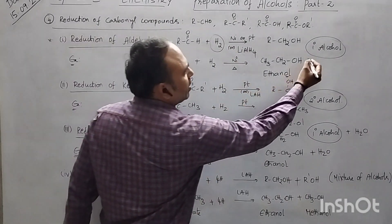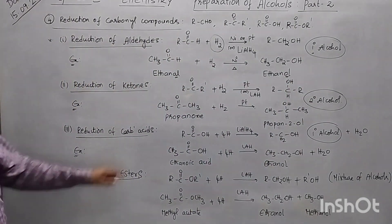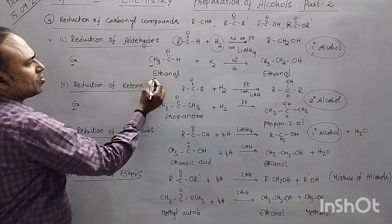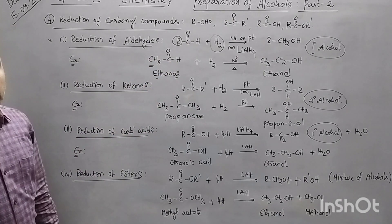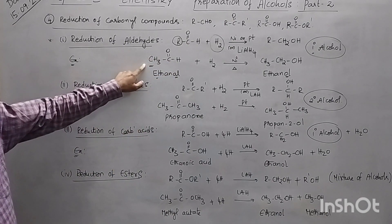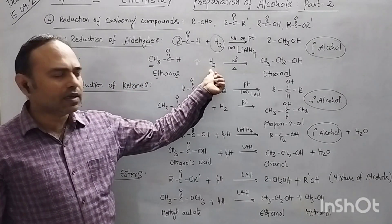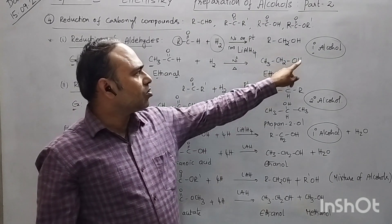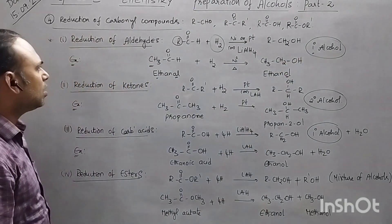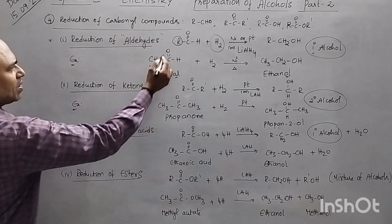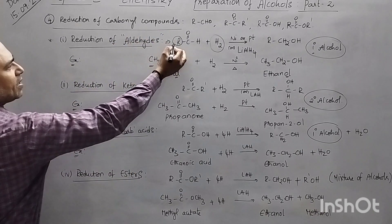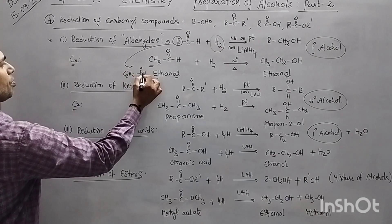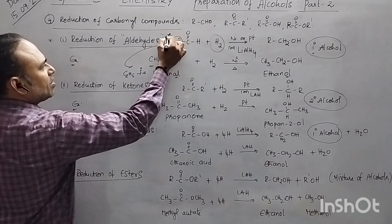Under these conditions you get a primary alcohol, that is RCH2OH. This is the general equation. In place of R, if we take a methyl group, CH3CHO is acetaldehyde. Acetaldehyde undergoes reduction in the presence of a nickel catalyst on heating to give ethanol. You can also replace R with C2H5CHO — remembering the general equation, you can write the examples.